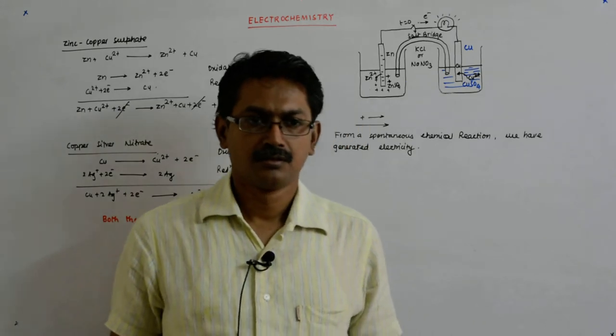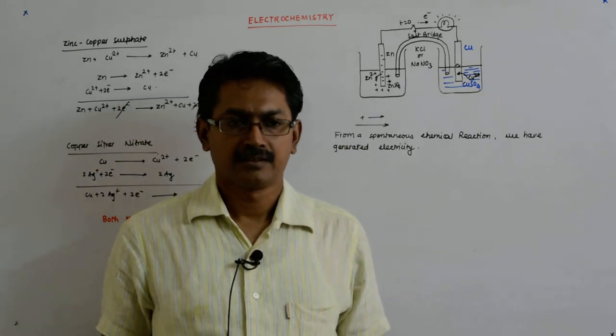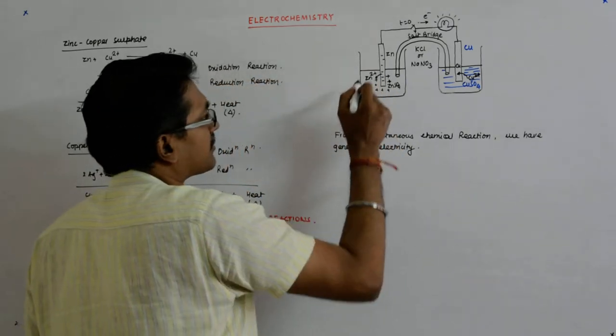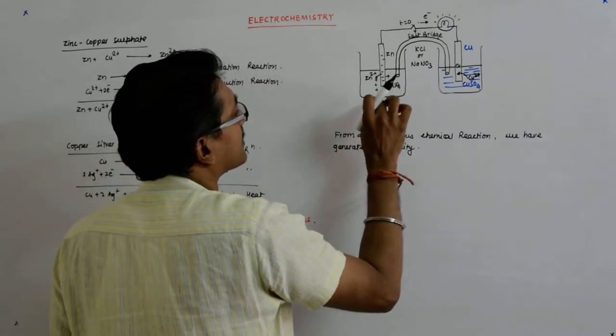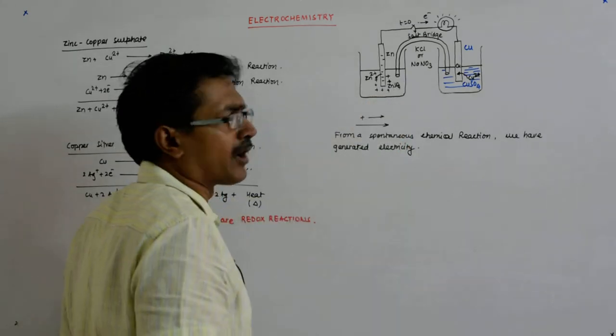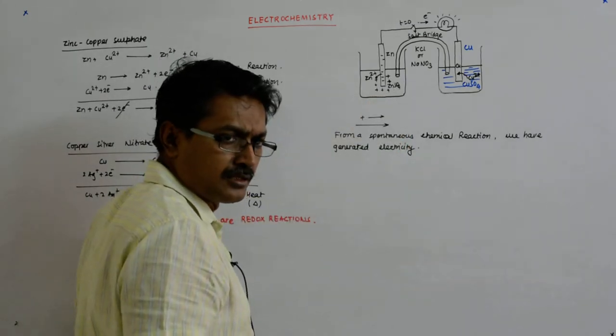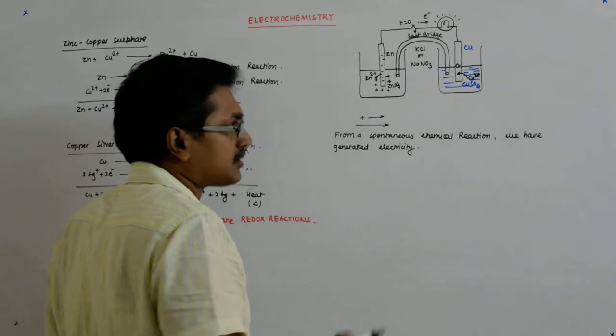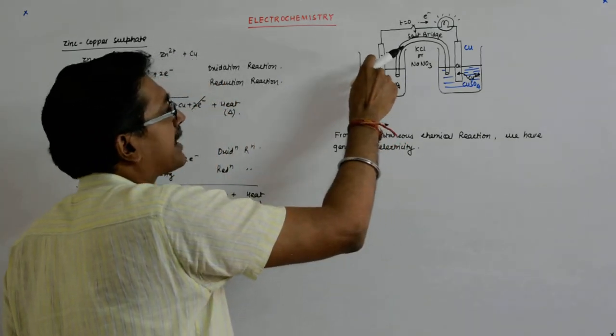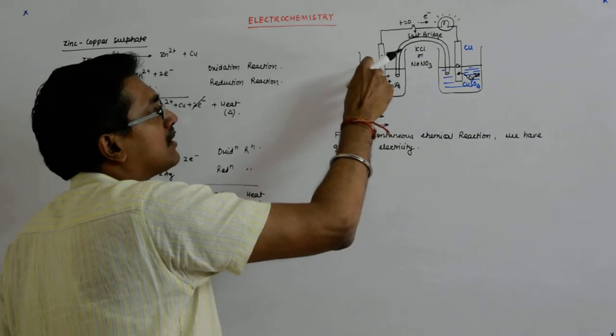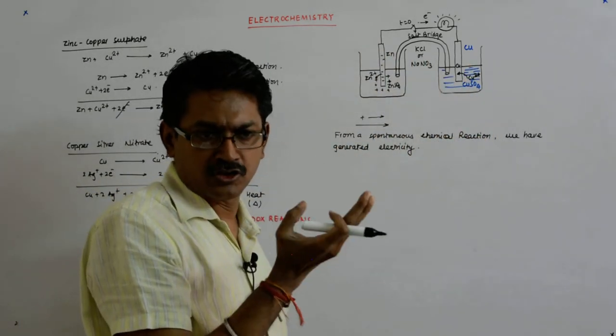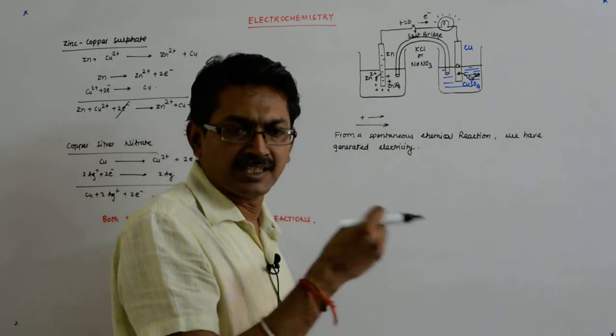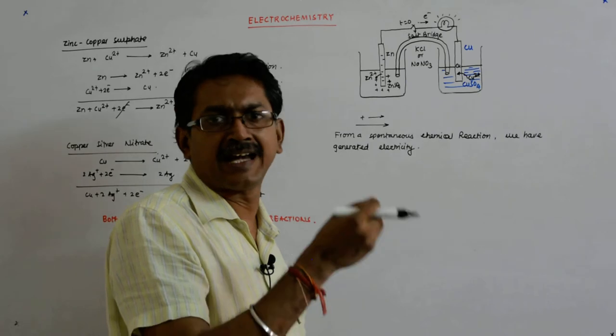And what will happen after some time? If you look at the electrons, what do you expect to see? The zinc atom has left two electrons and it is jumping into the solution. So in effect, the atom is getting out from this electrode.